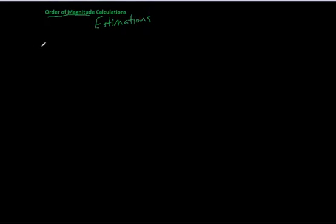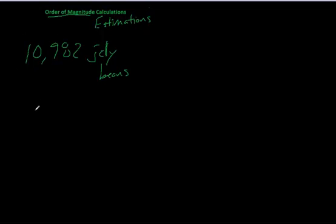Well, let's say I had a number like 10,982 jelly beans. If you take this number and put it in scientific notation, it becomes 1.0982 times 10 to the fourth jelly beans. That 4 tells us that the order of magnitude of jelly beans is to the fourth.